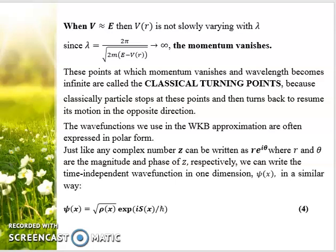This situation is called the classical turning point. At this point, when momentum vanishes, the particle has zero velocity. It is similar to when a stone is thrown upward and reaches the highest point—momentarily its velocity becomes zero and then it falls downward. Classically, the particle stops at that point and then turns back to resume its motion in the opposite direction.